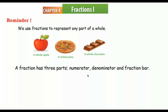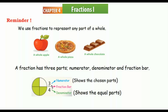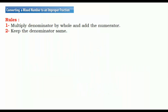A fraction has three parts: numerator, denominator, and fraction bar. This shape is divided into four equal parts — four is the denominator. The denominator shows the equal parts in a whole. Three is the chosen part, which we call the numerator. The numerator shows the chosen parts in a whole.